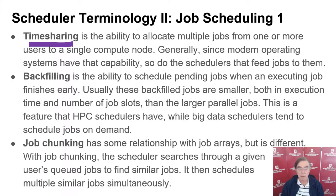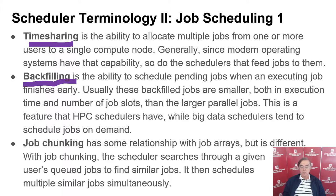Timesharing is running multiple jobs on a single node, which is very typical these days — except maybe for parallel jobs where synchronization means you can't timeshare. Backfilling is scheduling pending jobs so they can run when an executor finishes early; these are typically smaller jobs designed to fill up space. Chunking is dividing jobs up into groups which have similar characteristics and therefore can probably be run in a similar way.